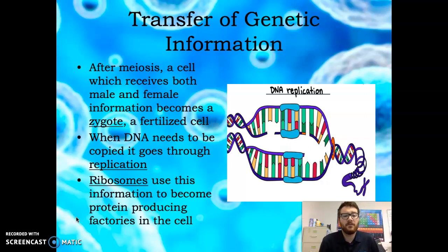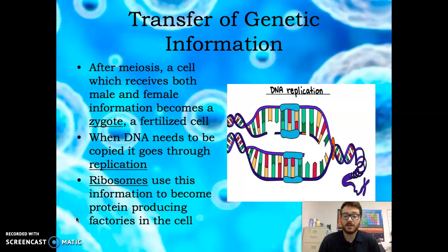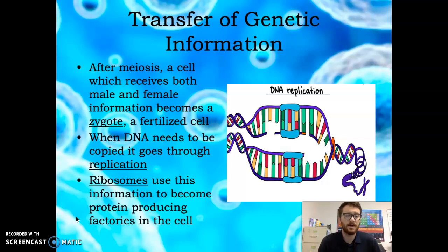During meiosis, you have a formed zygote — a fertilized cell. This zygote contains all the genetic information that makes you who you are: all of your DNA. When DNA needs to be copied, it goes through replication. Replication is just a scientific way of saying duplicate, except we don't use that term in biology. The idea is the same: DNA makes another strand of itself, and the process keeps going.